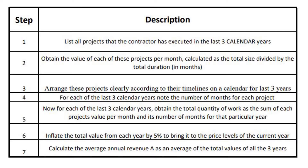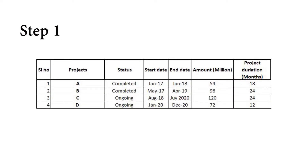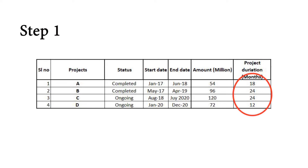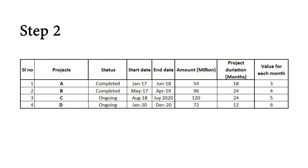Let's begin the calculation. Following will be the steps to calculate average turnover. Step 1: List all the projects the contractor has executed in the last three calendar years, both completed and ongoing, with project duration in months and start and completion dates. Let's assume we are in 2020 and the following are the projects of a contractor. Step 2: Obtain the value of these projects per month, calculated as the total amount divided by its duration.